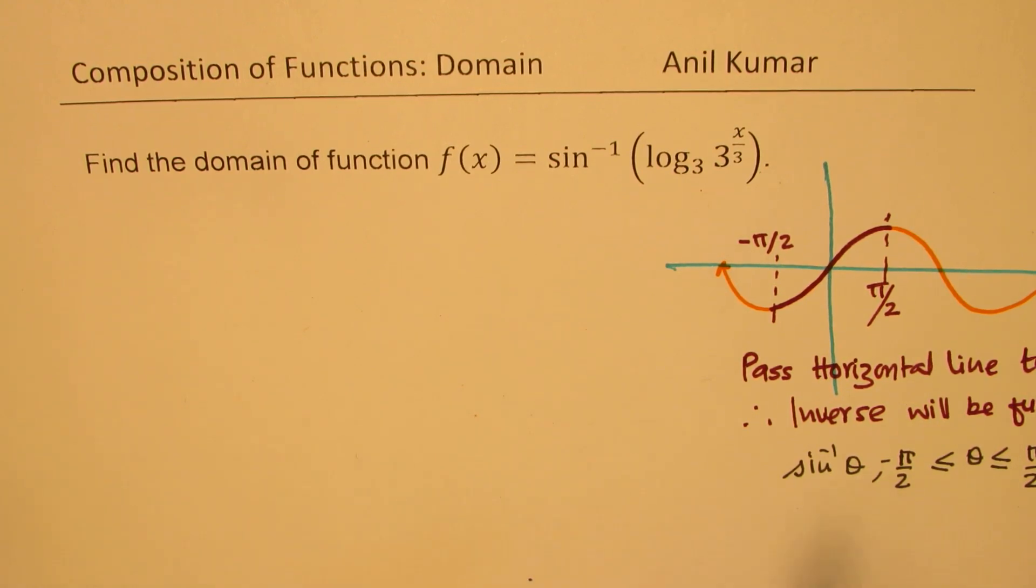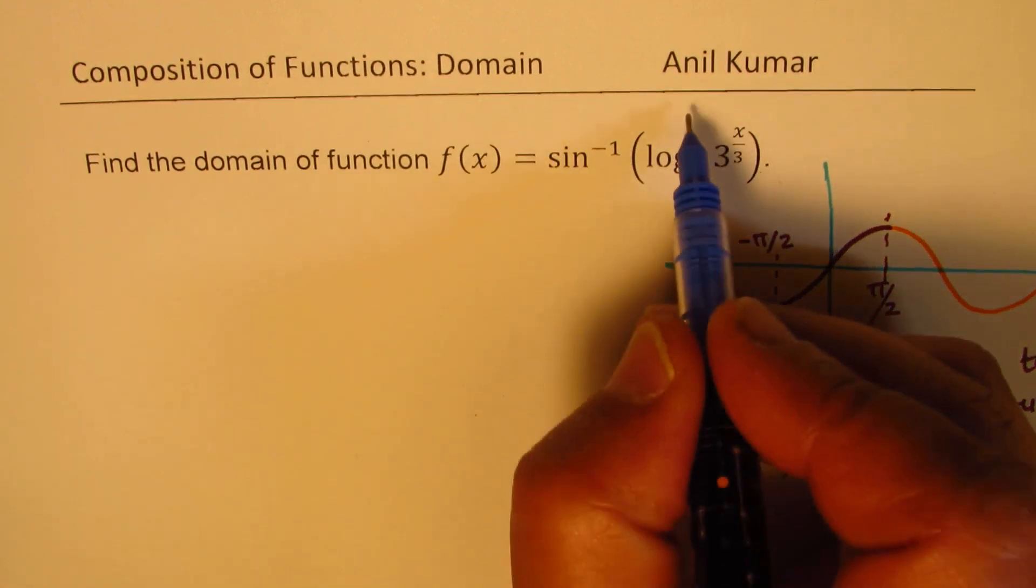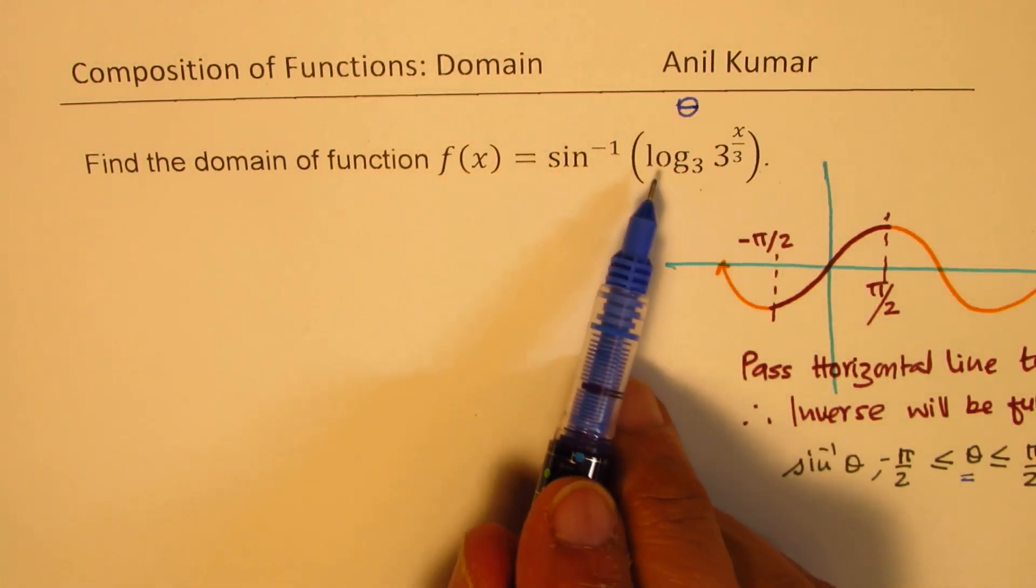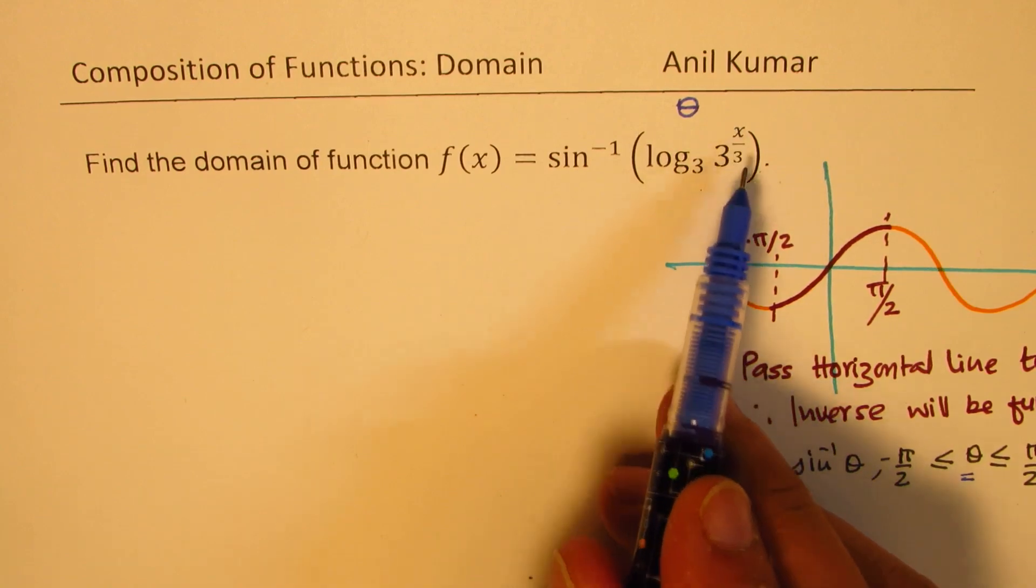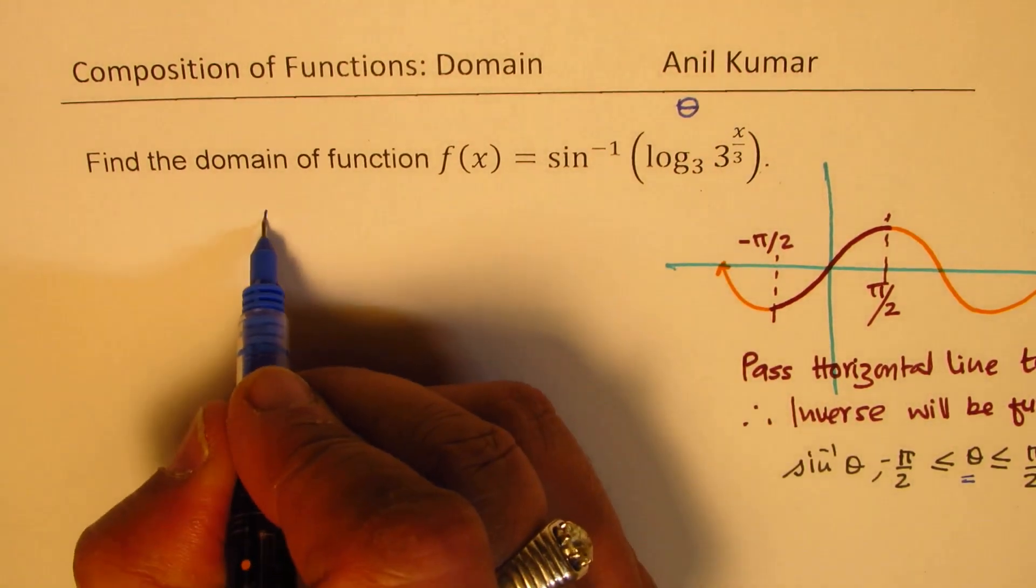Now let us see how to solve it. So we have realized this theta should be between minus pi by 2 to plus pi by 2. In our case, what is theta? Theta is log to the base 3 of 3 to the power of x over 3.